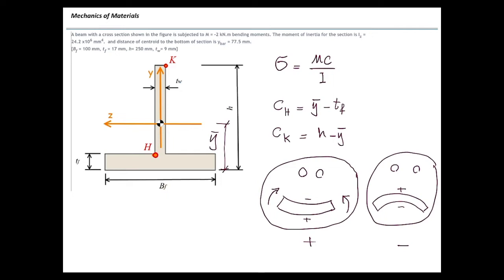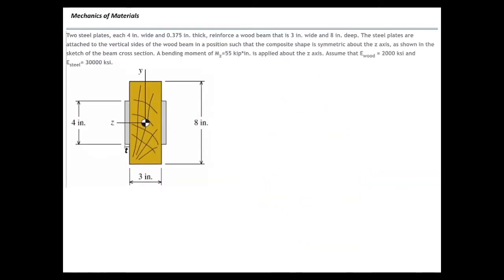Now let's talk about the composite section problem. We don't need to determine the centroid because it is a symmetric section, so the centroid is at half the height. For the moment of inertia, the problem specifies to determine it by transforming the section into wood. This means we need to expand the dimension of the steel plate on both sides to get the transformed section. We don't change the height, which remains 4, and the thickness after transformation becomes N multiplied by T.